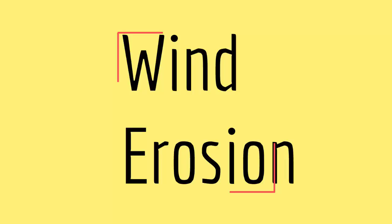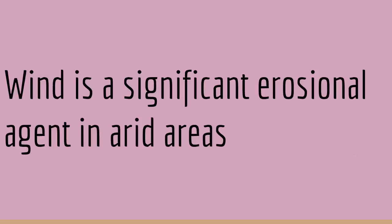Hello everyone, welcome to a new lecture. In this video we are going to talk about wind erosion. We have talked about erosion in previous lectures — erosion is just removal of rock materials from one location to another. Wind is a significant erosional agent in arid areas due to lack of vegetation or little vegetation and little water. In arid areas, the rock materials broken down by weathering can be removed very easily as they require very little energy.